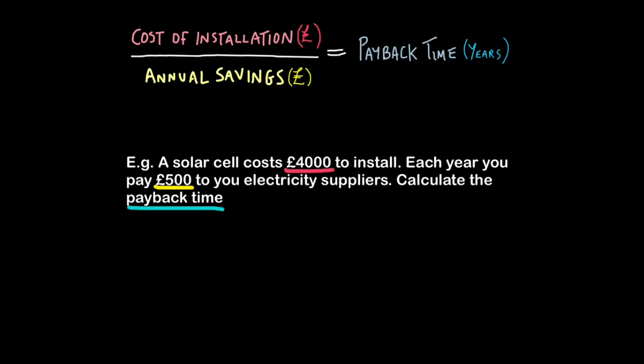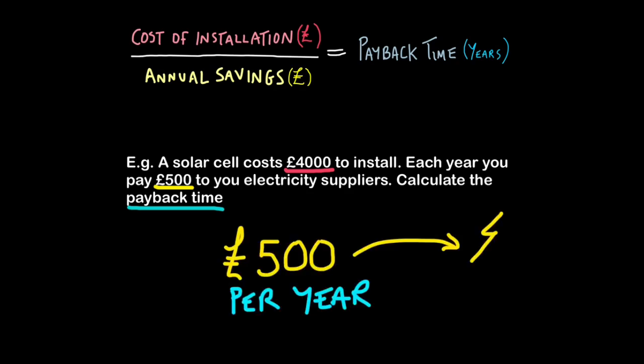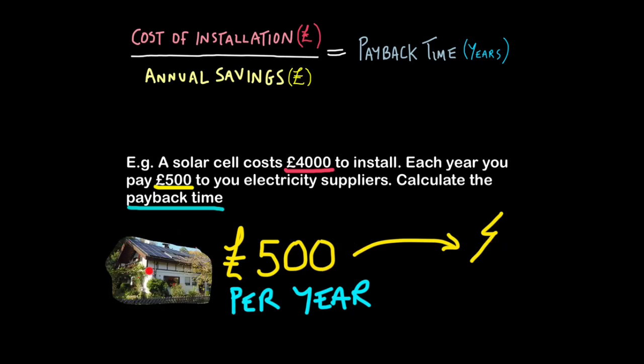Now this question has the ability to throw you off course. It basically depends on you interpreting it correctly. Basically, what it's saying is every year, you pay £500 to your electricity suppliers. However, now that you have solar cells installed on your roof, you no longer need to give your electricity suppliers £500 every year. So this becomes your annual saving. So now you can interpret the question properly.